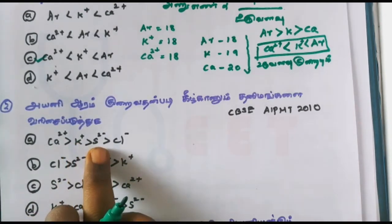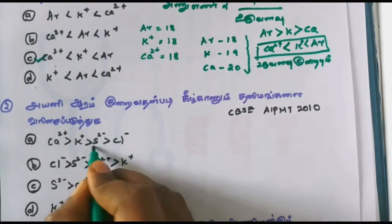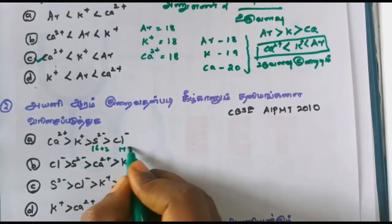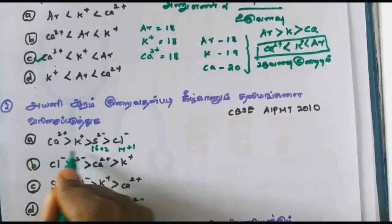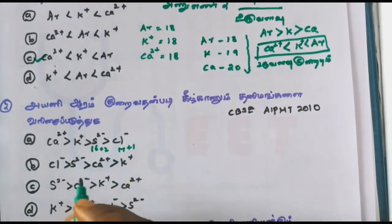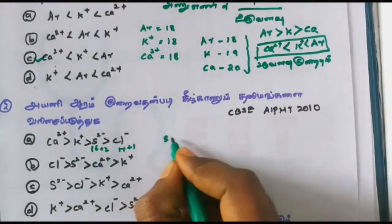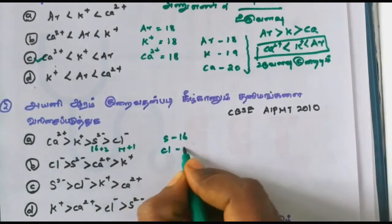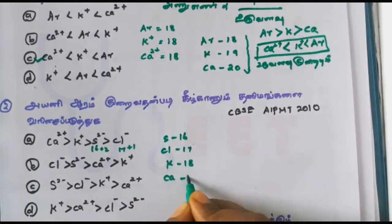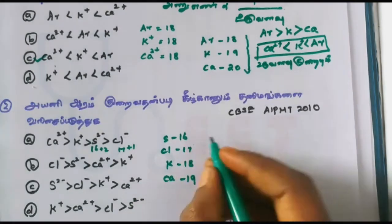We have to add 2 electrons to sulfur: 16 plus 2 equals 18. Chlorine has 17 electrons and gains 1 electron to reach 18. So consider what we need to add. Sulfur: 16, chlorine: 17, potassium: 18 (loses 1), calcium: 20 (loses 2). We add electrons slowly to reach isoelectronic configuration.